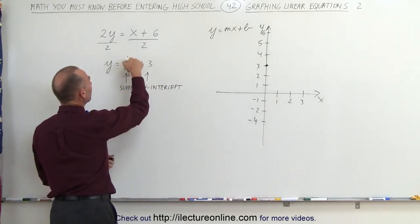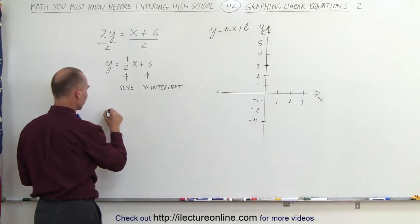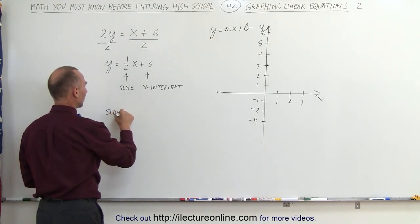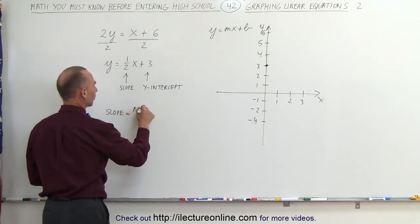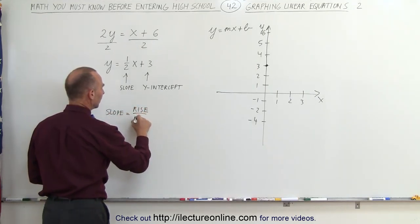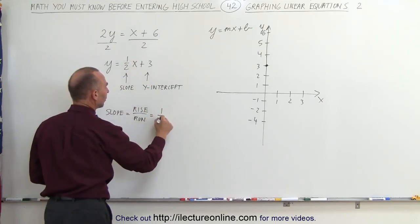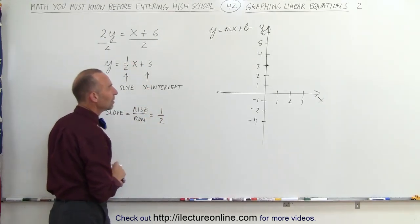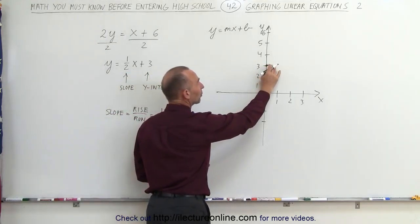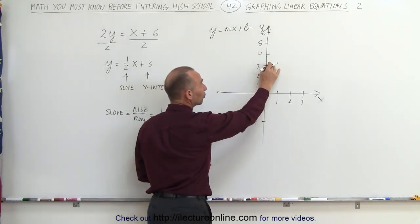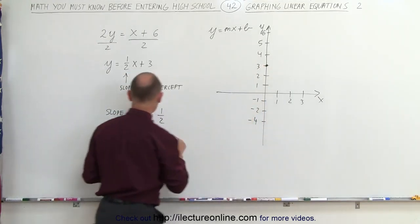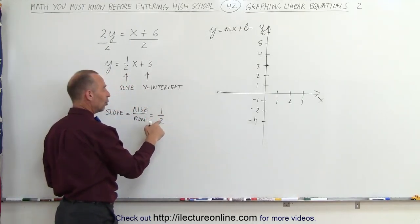I also know that the slope is equal to 1 half. Now, by definition, the slope is equal to the ratio of the rise divided by the run, and in this case, the rise is equal to 1 and the run is equal to 2, which means starting from the point where it crosses the y-axis, which is called the y-intercept, I'm going to go up 1 and over 2.